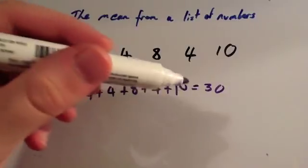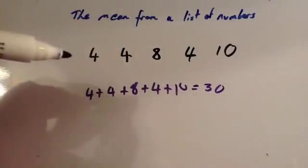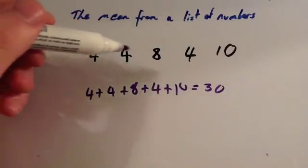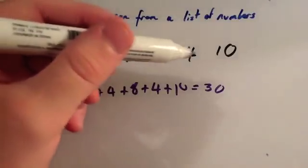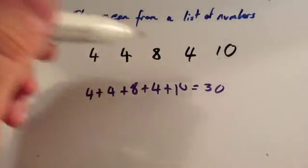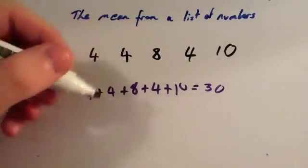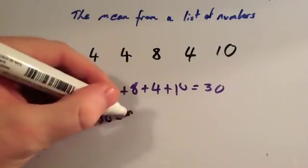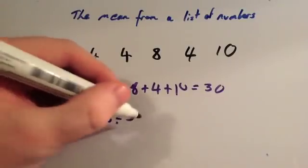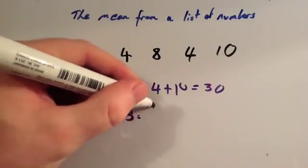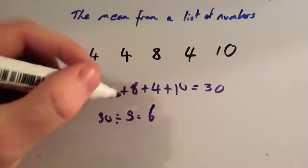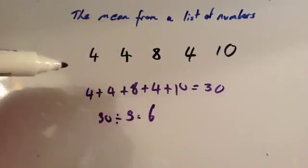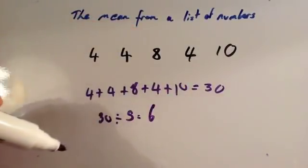Then you need to divide by how many numbers there are. Well, there are 1, 2, 3, 4, 5 numbers in the set. So you're going to do 30 divided by 5. And 30 divided by 5 is 6. So the mean from this set of numbers is 6.